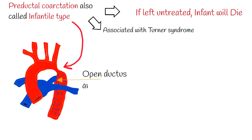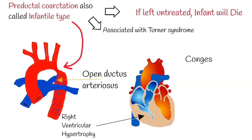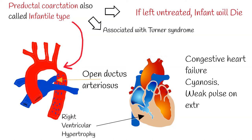Patent ductus arteriosus causes right ventricular hypertrophy. This is a secondary process because the right ventricle has to supply blood to the aorta through the patent ductus arteriosus. Such patients also have congestive heart failure due to the high load on the heart caused by coarctation, as well as cyanosis and weak pulse on extremities. Prognosis is poor without surgical correction.